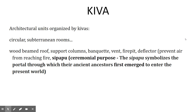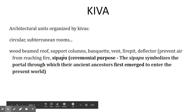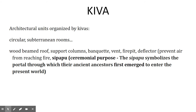The kiva has support columns, a banquette — basically stone seating around the perimeter — a vent, a fire pit, et cetera. One important feature is what's called a sipapu: a small hole opening in the floor of the kiva, understood to be a portal to the other world through which ancestors could emerge to communicate with current people. Connection and communication with the ancestors is really important.